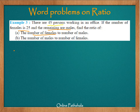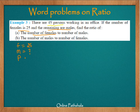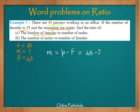In order to find the ratios A and B, we need to know the number of females and the number of males. Let us say the number of females is F, and we know it is 25. The number of males I represent by M. We know the total number of persons P is 45. We find the number of males by subtracting: M equals 45 minus 25, therefore M equals 20.